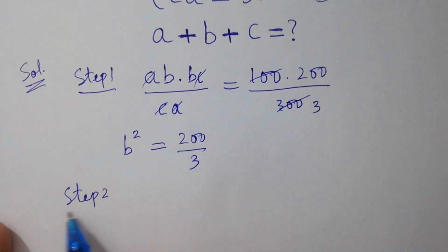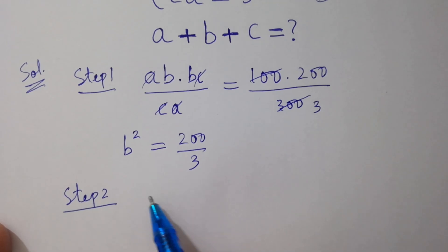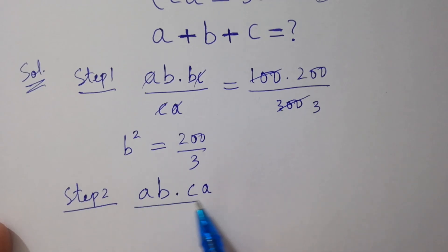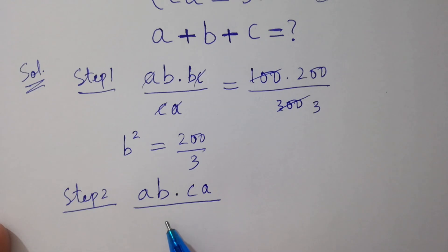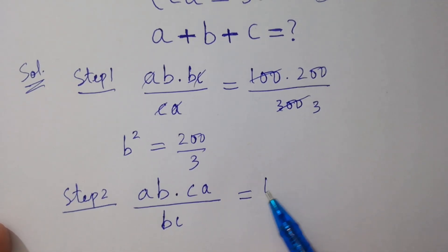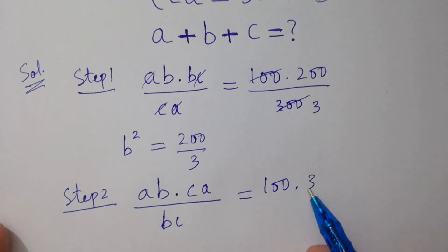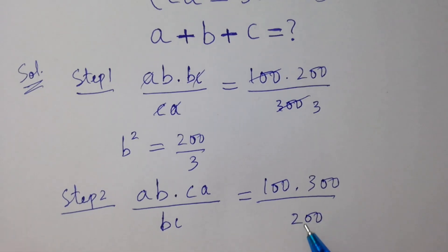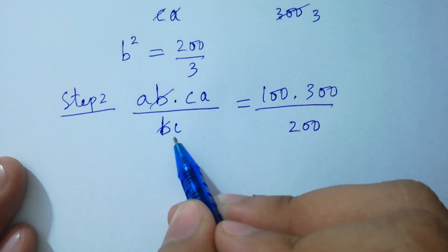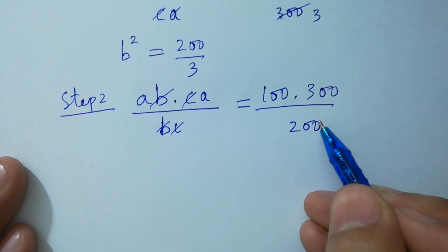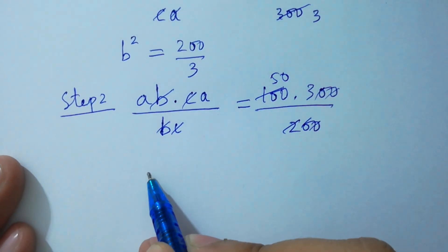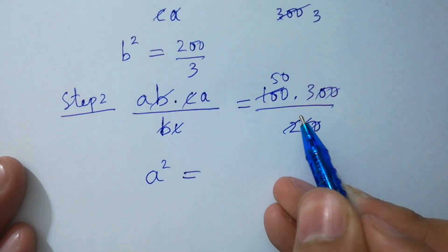Step 2: multiply the first equation by the third equation — ab times ca — divided by the second equation bc. That gives 100 times 300 over 200. Here b and b cancel, c and c cancel. 2 times 50 is 100. We get a squared equals 150.